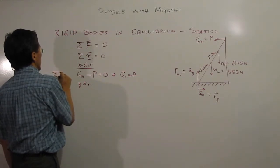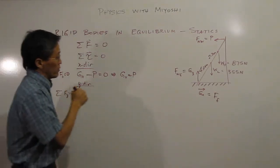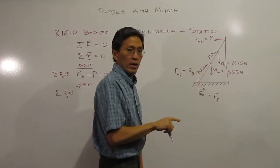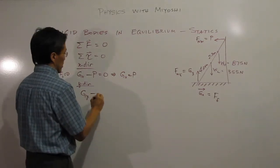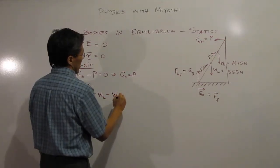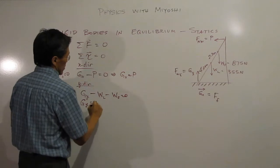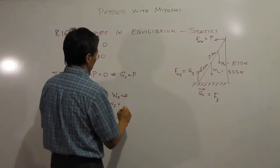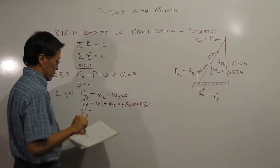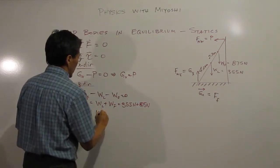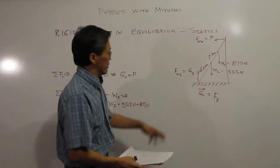In the y-direction, the sum of forces equals zero. We have three forces: GY going up, the weight of the ladder, and the weight of the firefighter. So GY minus the weight of the ladder minus the weight of the firefighter equals zero, giving us GY equals 355 newtons plus 875 newtons, which is 1230 newtons.